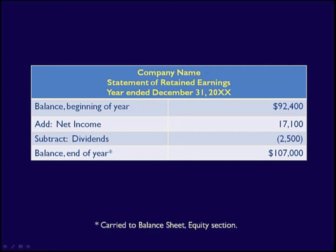The total at the bottom of the statement is the ending retained earnings — the amount that will be transferred to the equity section of the balance sheet. Pretty simple statement, but important to understand.